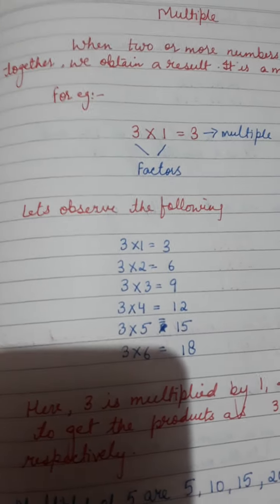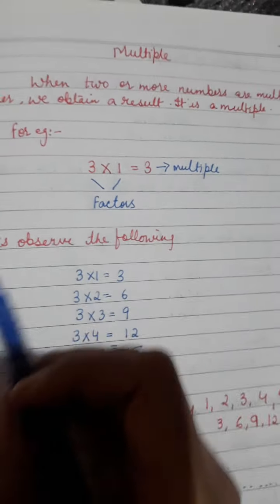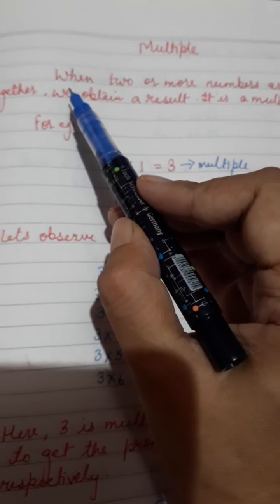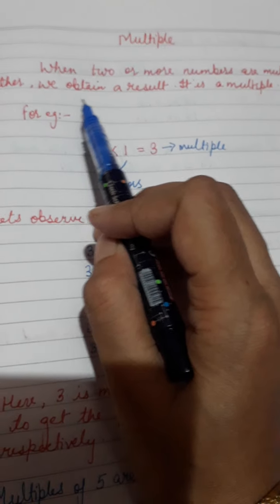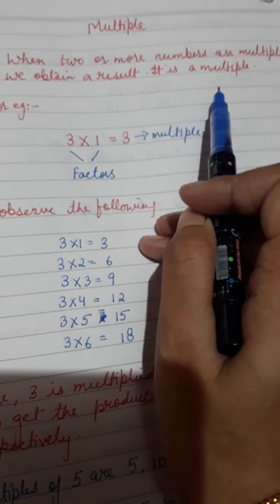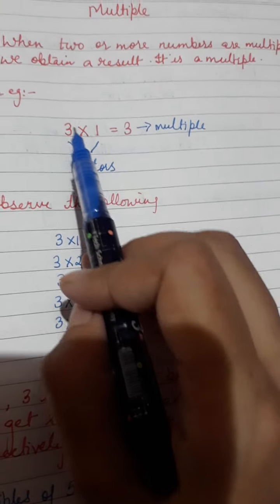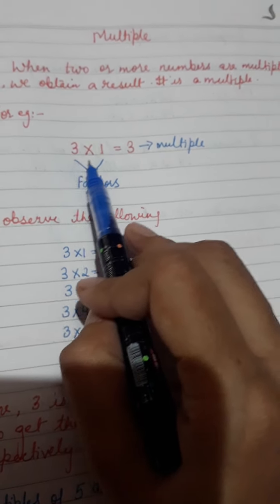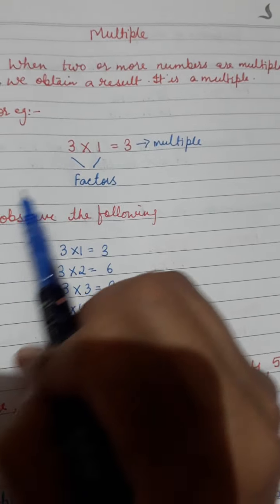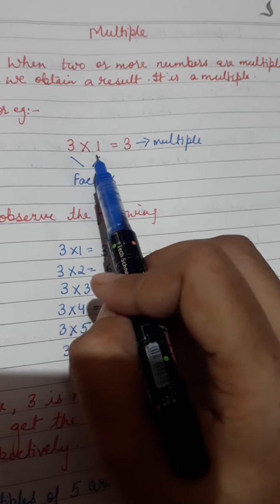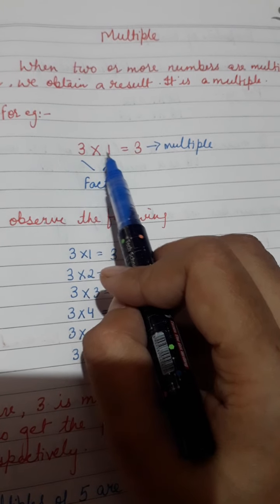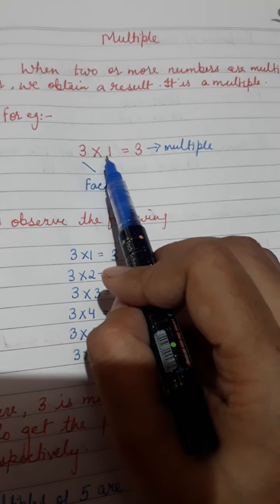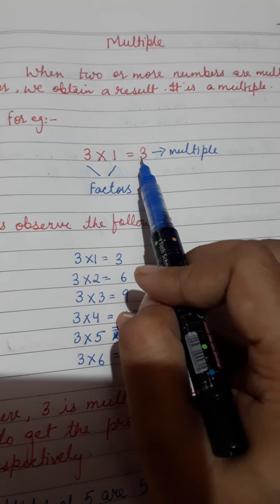Children, today we are going to learn what multiples are. When two or more numbers are multiplied together, we obtain a result — that result is called a multiple. The numbers which are multiplying are called factors. So when two or more numbers are multiplied together to obtain a result, the result is the multiple.